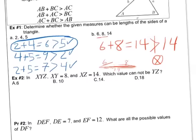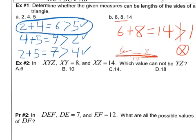And so we can actually figure out what the lengths of a triangle should be if we're given two sides of a triangle. That's what example 2 here is all about. They say in triangle XYZ, XY equals 8 and XZ equals 14. Which value cannot be YZ? Well, here's the deal. What we can do is we can actually take the two sides they give us, 8 and 14, and we can figure out the most that it can be.